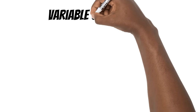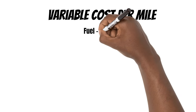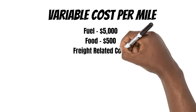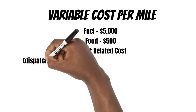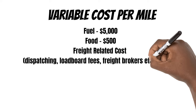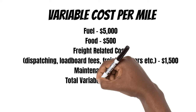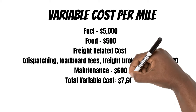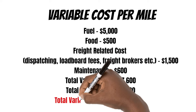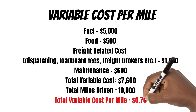Now we need to determine our variable cost per mile. Since we have the total number of our variable costs, we need to divide that by the same amount of miles driven, which was 10,000 that we used in the previous example. And we come up with a variable cost per mile of 76 cents.